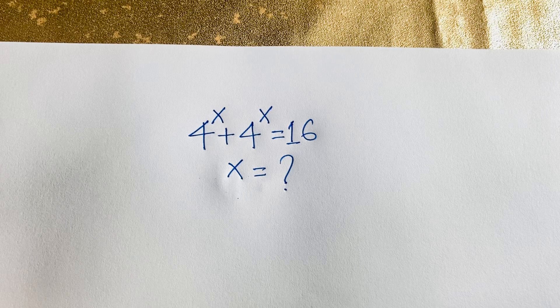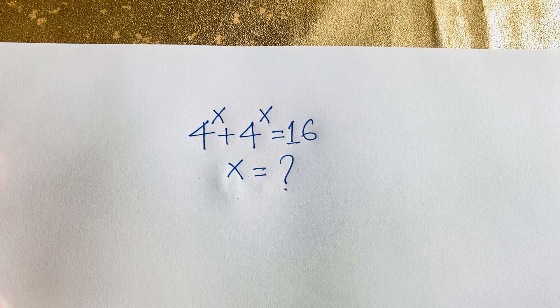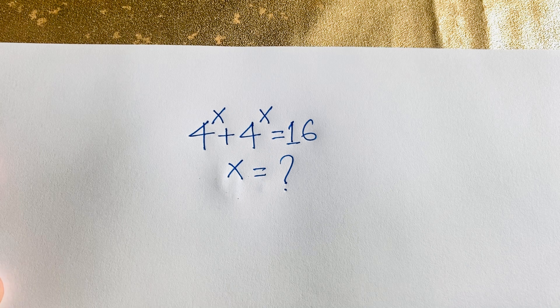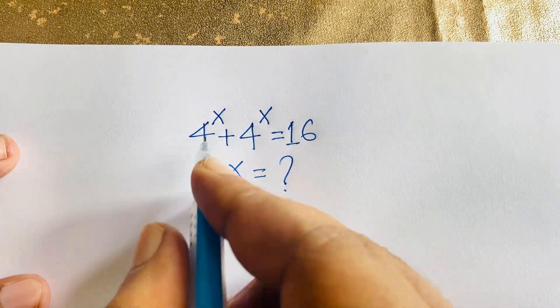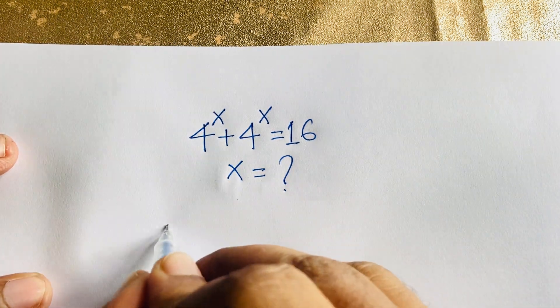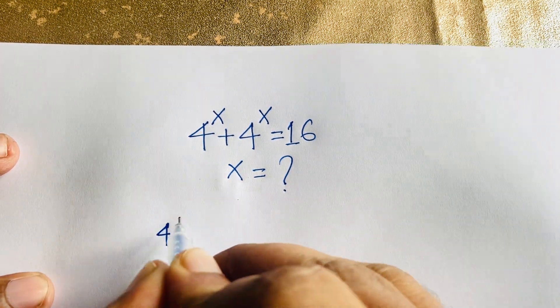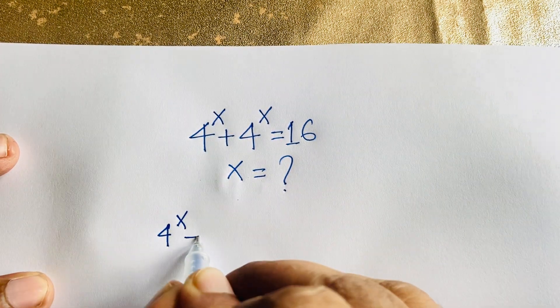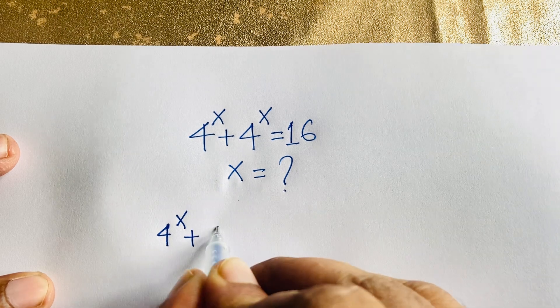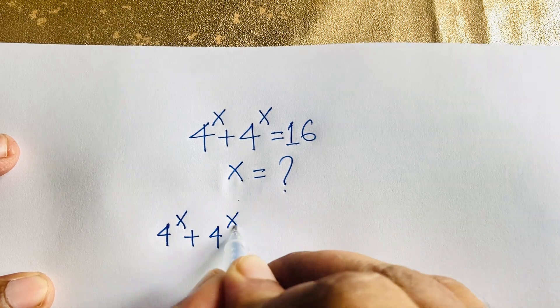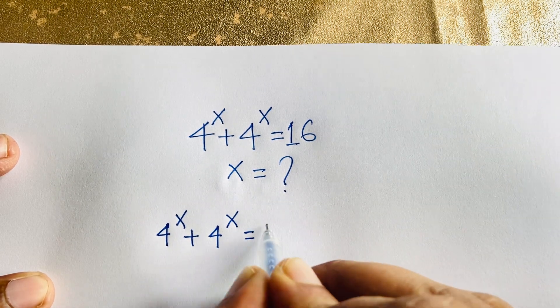4 to the power x plus 4 to the power x is equal to 16. x is equal to what? How to solve this question? In this case, 4 to the power x plus 4 to the power x is equal to 16.